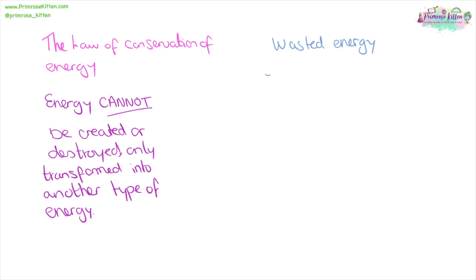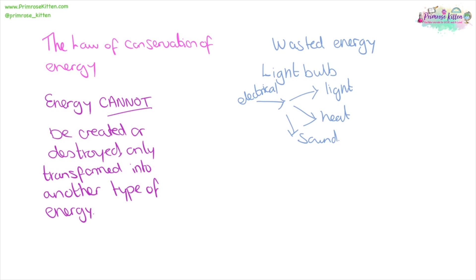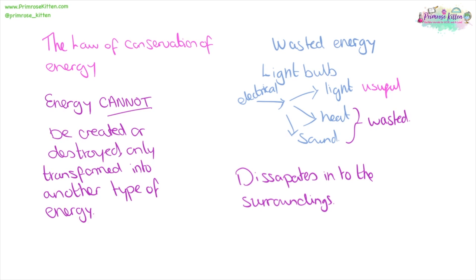While energy cannot be created or destroyed, it can be wasted. Wasted energy is any energy that comes out of a situation that we didn't intend. For example, in a light bulb, electrical energy goes in and is converted into light, heat, and sound. The light is useful energy, whereas the heat and sound are wasted energy. The wasted energy dissipates into the surroundings — it spreads out so much it can't be collected and used. It's not gone; it's just spread out — dissipated.